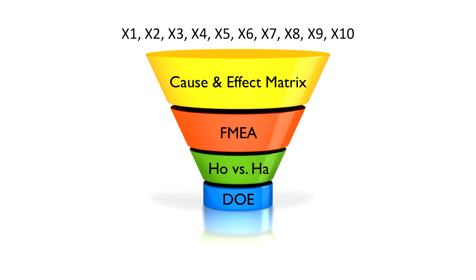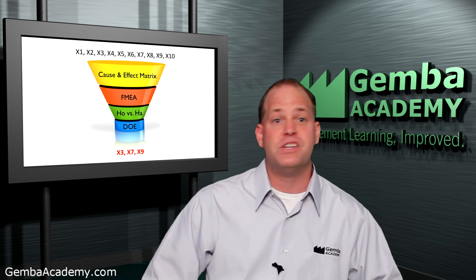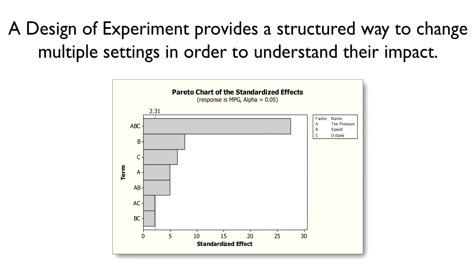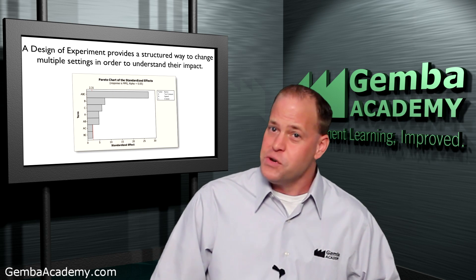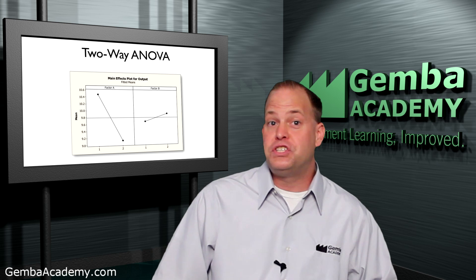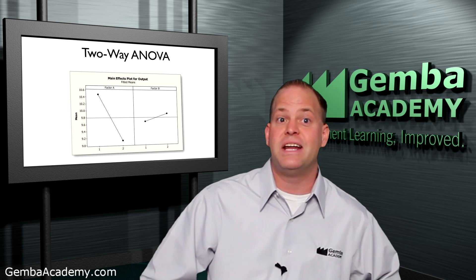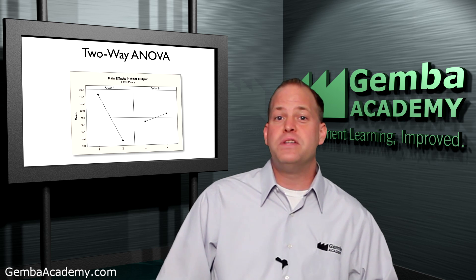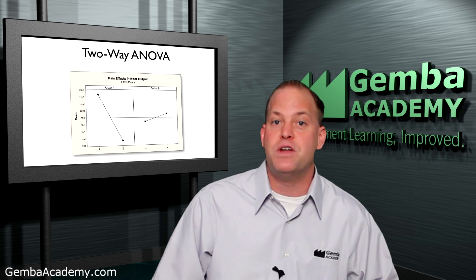With respect to the funnel, DOE would be found at the very bottom, leaving us with the most critical inputs, or red X's, that must be controlled and/or optimized to ensure optimal process performance. Formally defined, a design of experiment provides a structured way to change multiple settings in order to understand their impact on the process. We've actually seen the DOE concept before when we covered two-way ANOVA — studying two different factors at two levels is an example of what's called a full factorial DOE. But the DOE tool has much more to offer than a basic two-way ANOVA provides.